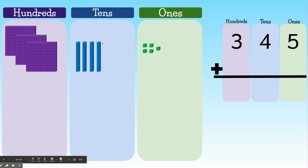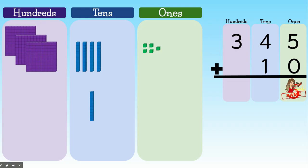Watch. Here's 345 plus 10. Okay. 5 plus zero is 5. That's the same number. 4 plus 1 is 5. That's different. And 3 hundreds plus zero hundreds is 3. That's the same number. See? 3 didn't change. The 5 didn't change. But the number in the tens place changed.